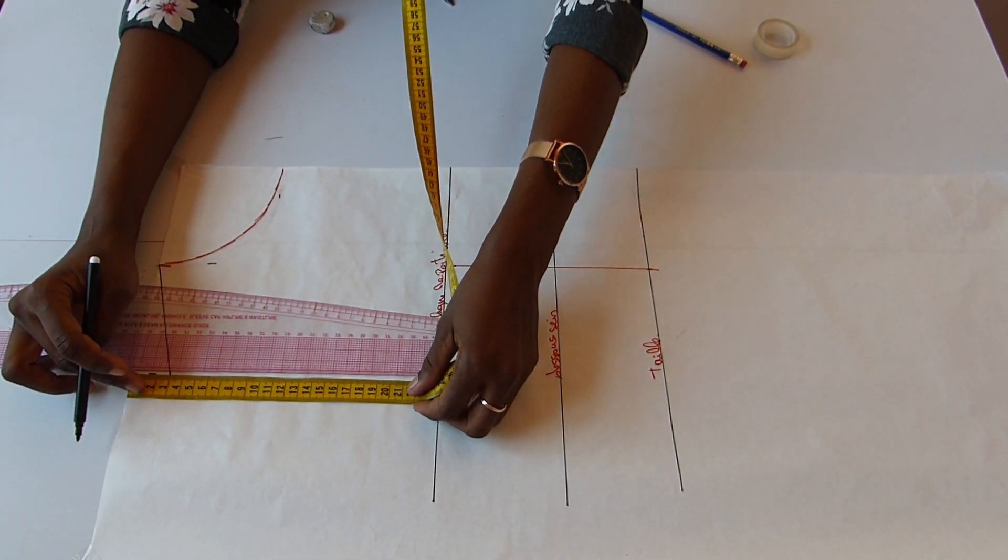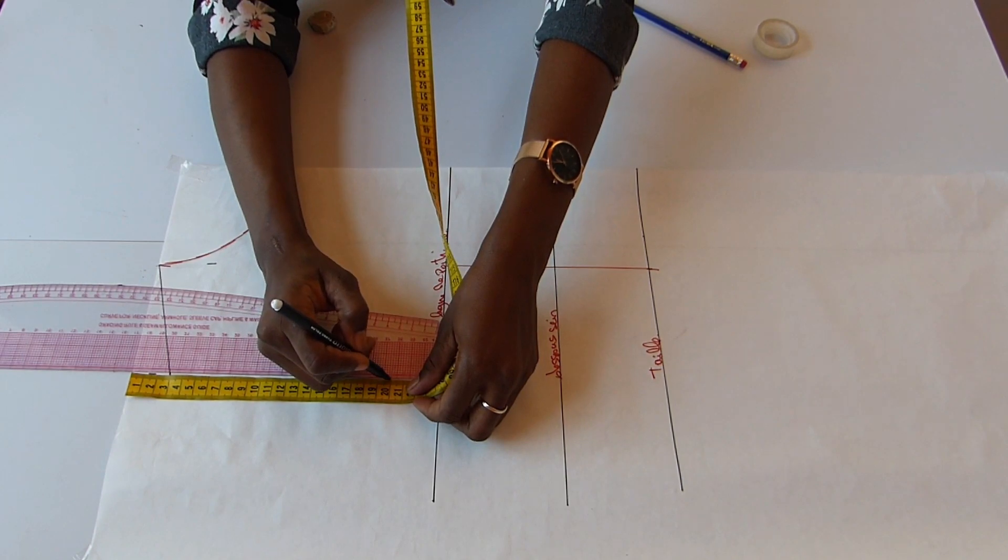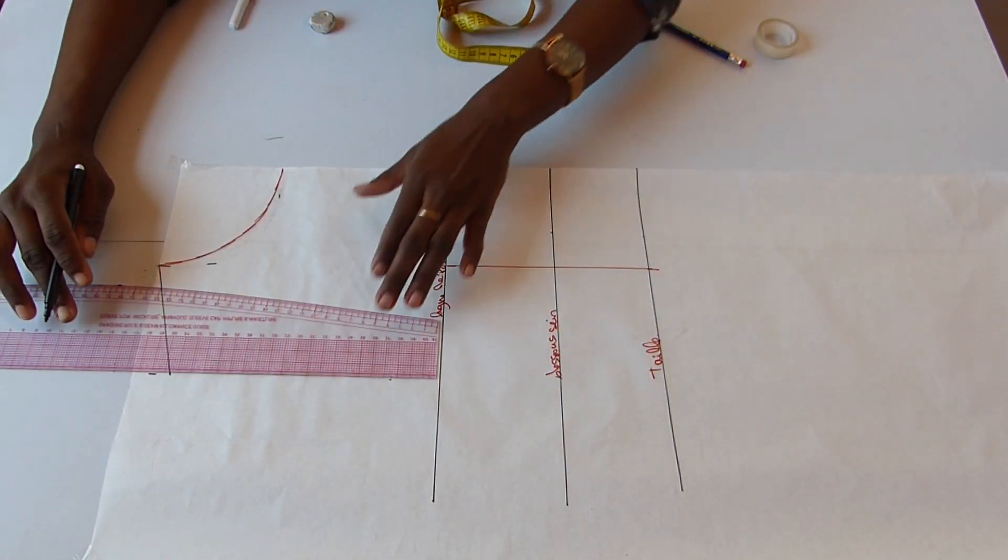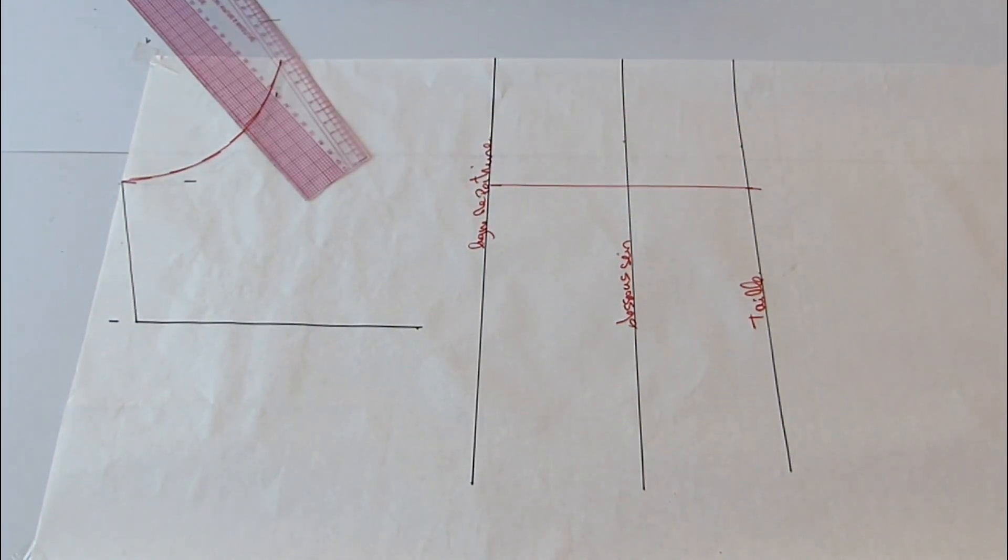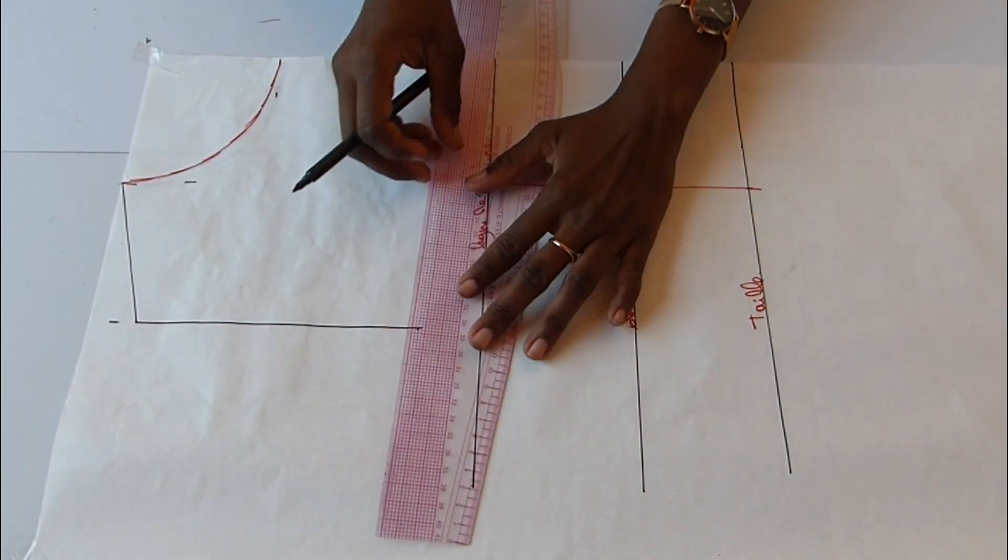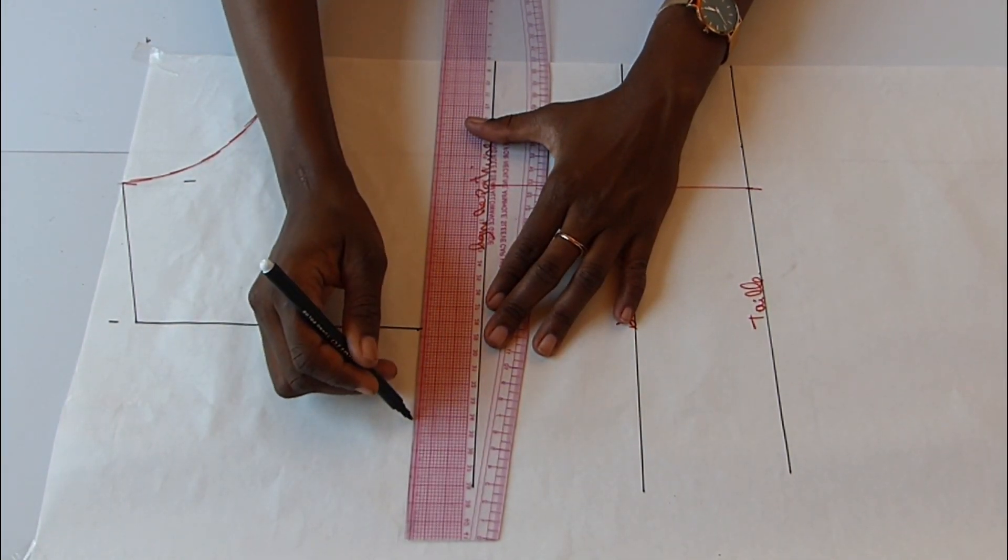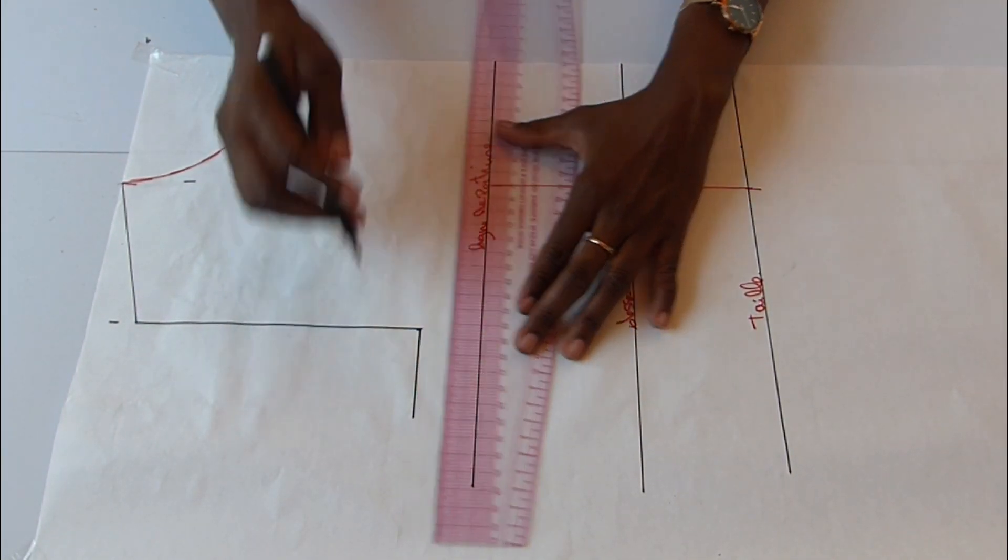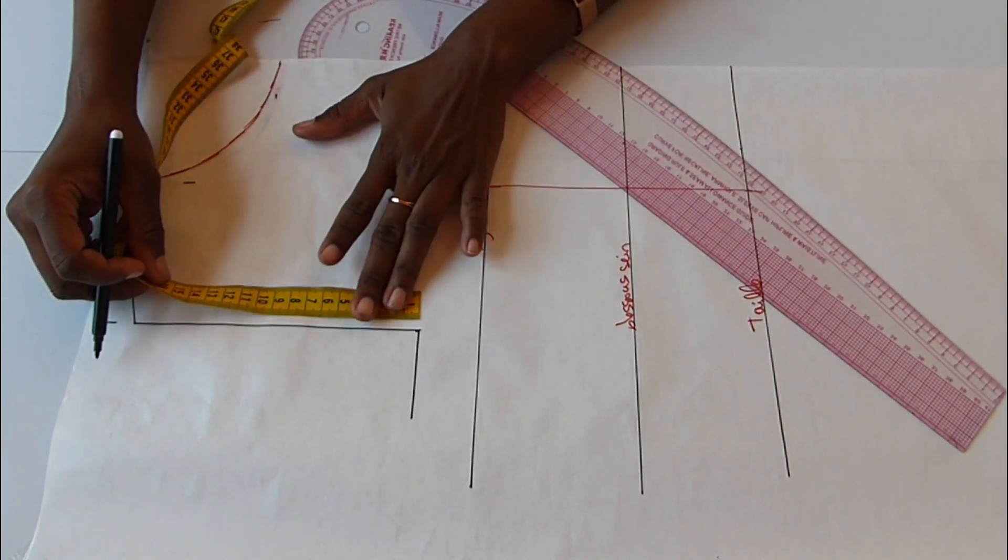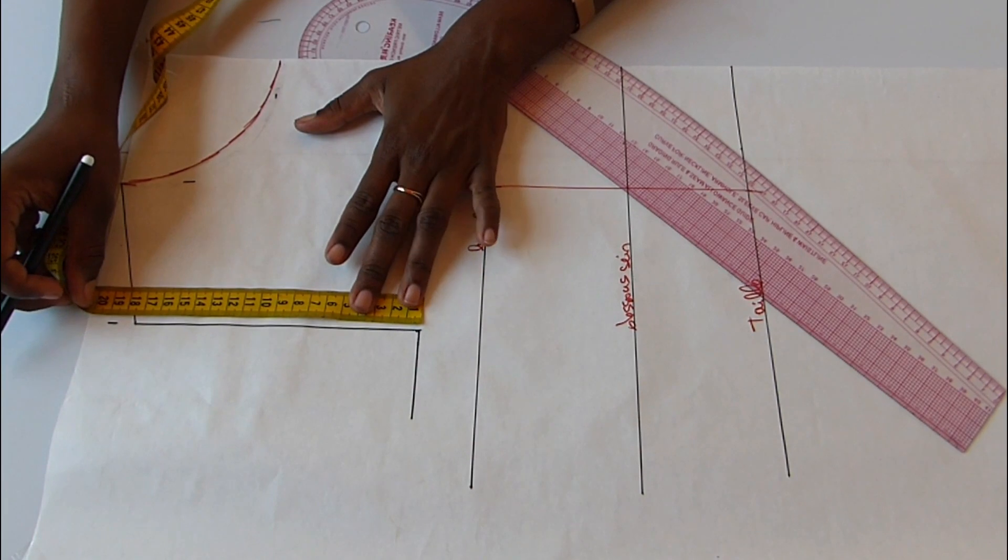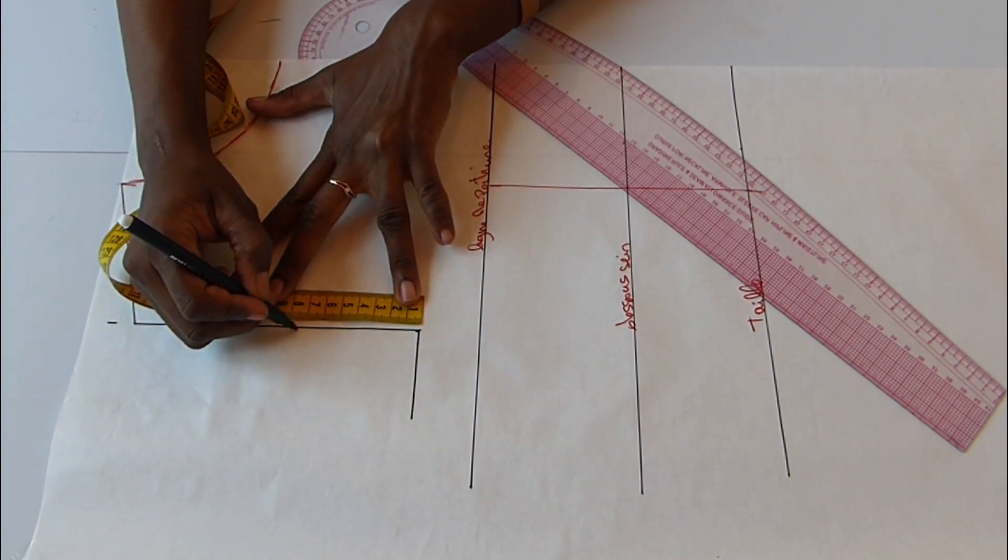Maintenant je vais repositionner et descendre mon encolure. Je vais baisser ma ligne d'épaule de 3 cm sur la ligne de ma carrure que j'ai positionnée par l'avant. Je vais descendre de mon amanchu de 22 cm et après je vais décaler de 2 cm pour pouvoir démarquer la grande carrure et la petite carrure pour former un bel amanchu.